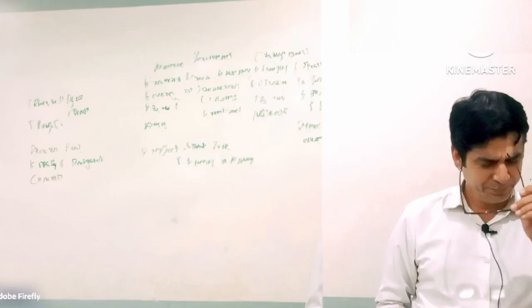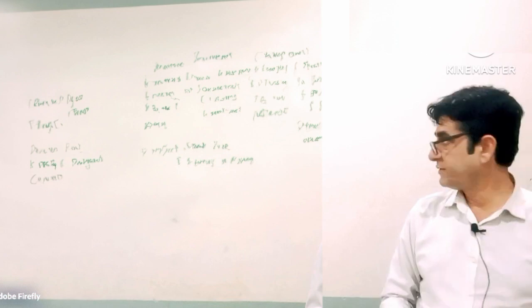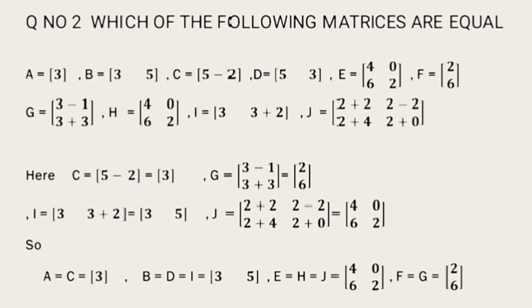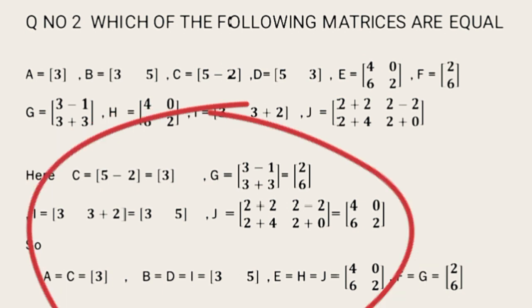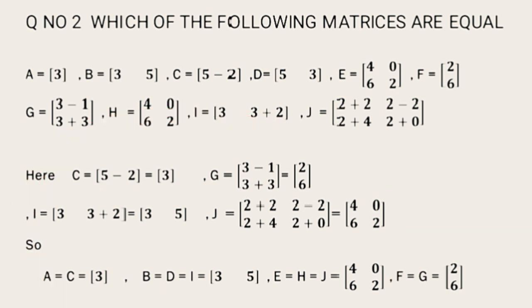Now we go over question number 2. Here we have some matrices given. If there are plus or minus elements, we can subtract first. So C matrix is actually 5 minus 2 is 3. Similarly, the matrix G is 3 minus 1 is 2 and 3 plus 3 is 6, so it's 2, 6.